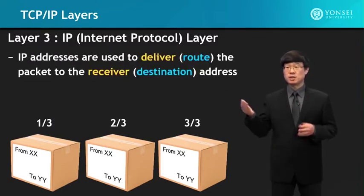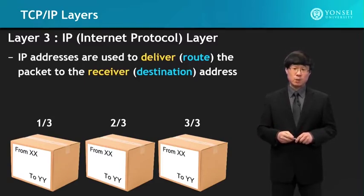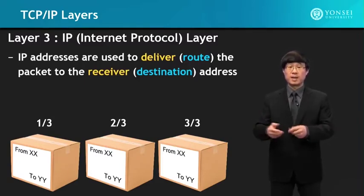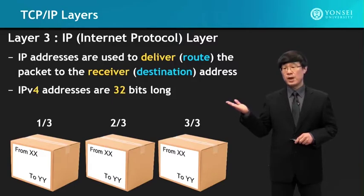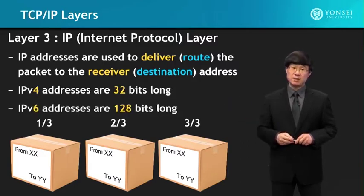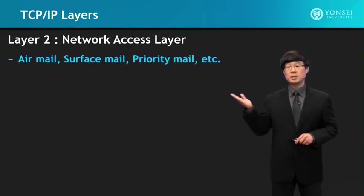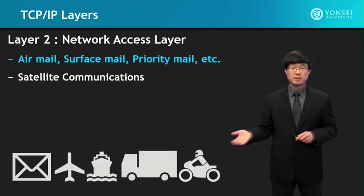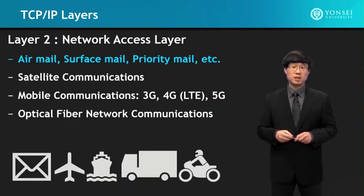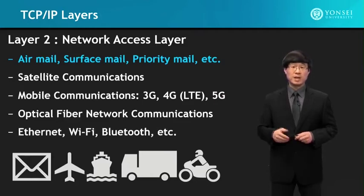IP addresses are used to deliver the packet to the receiver — the delivering process is the routing, and the receiver is indicated in the destination address. IPv4 addresses are 32 bits long, and IPv6 addresses are 128 bits long. Then comes selecting the mail type — air mail, surface mail, priority mail — that's like selecting the network access layer. In actual networking, that would mean selecting between satellite communication, mobile communication, optical fiber, Ethernet, Wi-Fi, Bluetooth, and other communication protocols.